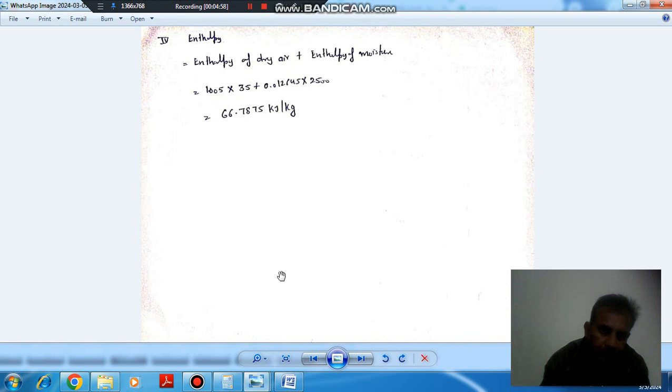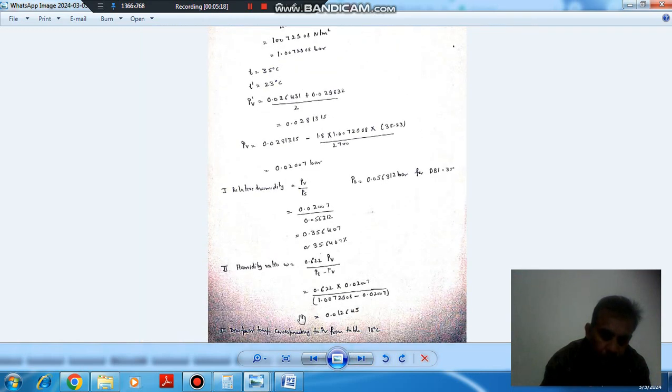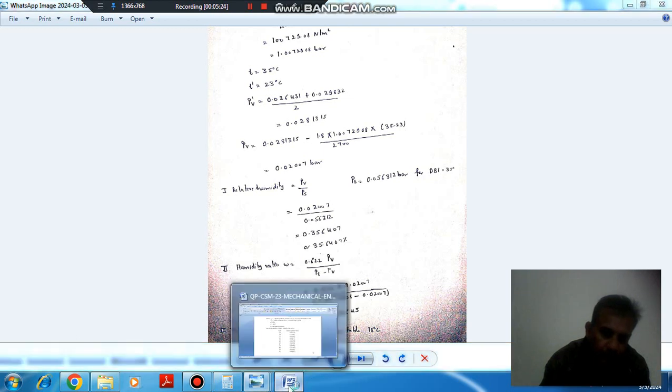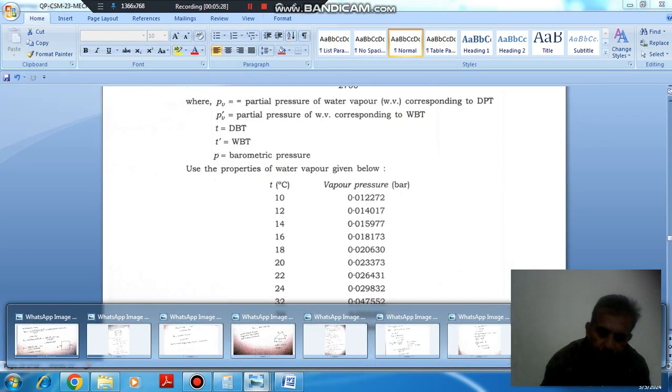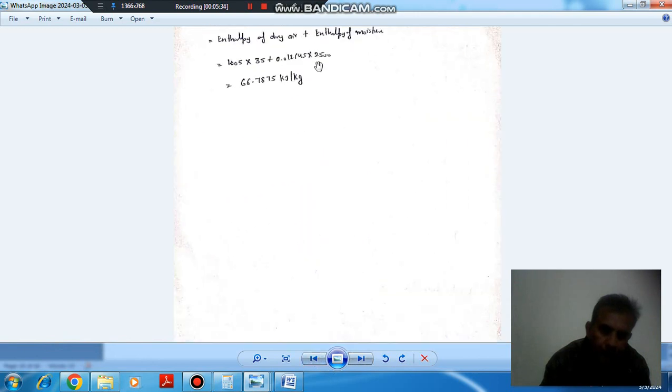Now enthalpy. Enthalpy consists of enthalpy of dry air plus enthalpy of moisture. DBT is 35 degrees, C_P is 1.005. This is enthalpy of dry air. And moisture content we have just calculated, humidity ratio is 0.01645. This is the moisture content in 1 kilogram of air, multiplied by enthalpy which is 2500. It will be 76.785 kilojoule per kilogram. Thank you.